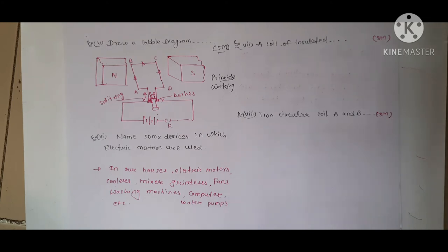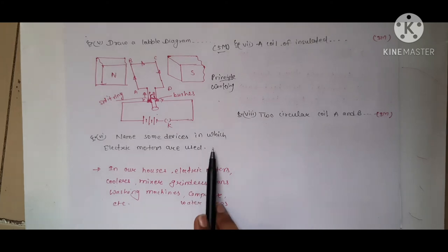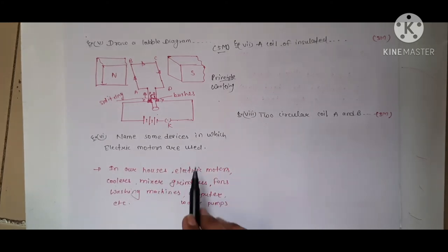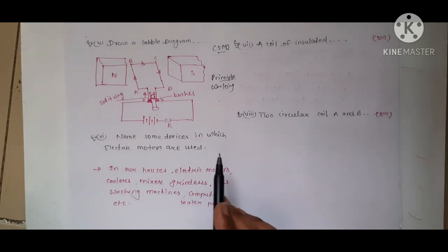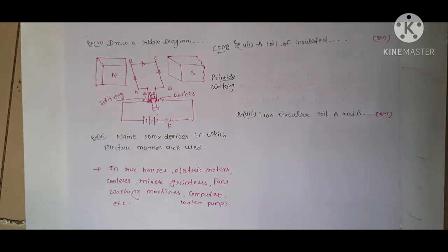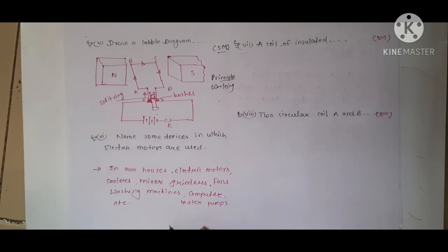Question number 6: name some devices in which electric motors are used. Electric motors are used in many devices such as coolers, mixers, grinders, washing machines, fans, computers, and water pumps. There are quite a few things in which electric motors are used.